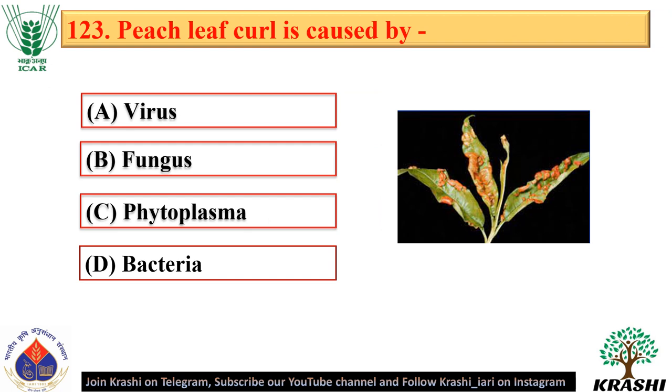Question number 123. Peach leaf curl is caused by the fungus Taphrina deformans.